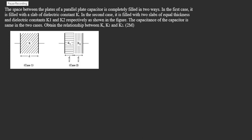The space between the plates of a parallel plate capacitor is completely filled in two ways. In the first case, it is filled with a slab of dielectric constant k. In the second case, it is filled with two slabs of equal thickness and dielectric constants k1 and k2 respectively as shown in the figure. The capacitance of the capacitor is same in the two cases. Obtain the relation between k, k1 and k2.